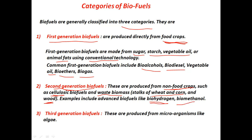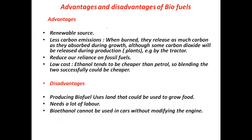Examples of second generation biofuels include advanced biofuels like bio-hydrogen and bio-methanol. Third generation biofuels are produced from microorganisms like algae. These biofuels have certain advantages: since the raw material is basically plant material or animal waste, it can be renewed and replenished easily, making them a renewable source of energy.